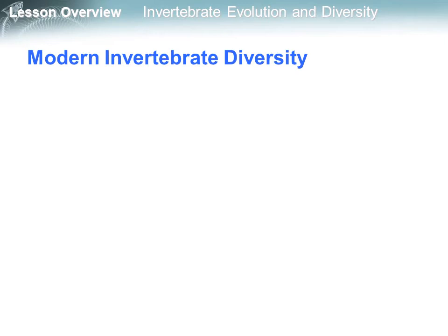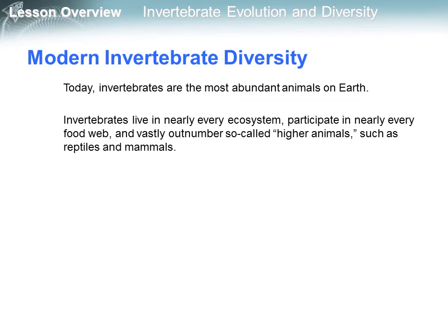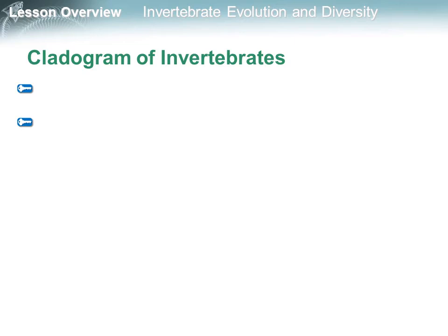Now let's see the modern invertebrate diversity. Today, invertebrates are the most abundant animals on Earth. Invertebrates live in nearly every ecosystem, participate in nearly every food web, and vastly outnumber so-called higher animals, such as reptiles and mammals.